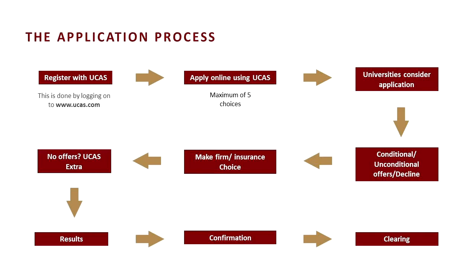Once you've sent that application, universities consider it. We may make conditional offers, so you've got to get particular grades or a certain amount of UCAS points on the UCAS tariff. It could be an unconditional offer, particularly if you've already got your level three qualifications. You may be made an alternative offer if you don't quite meet our criteria for the course you applied for but we've got another course we think would be very suitable. Sadly, in some cases we do have to decline students.